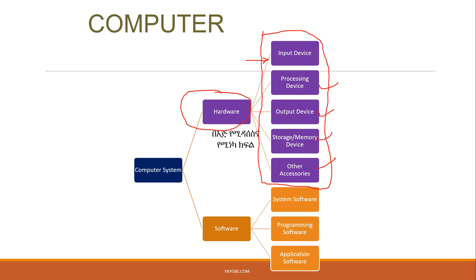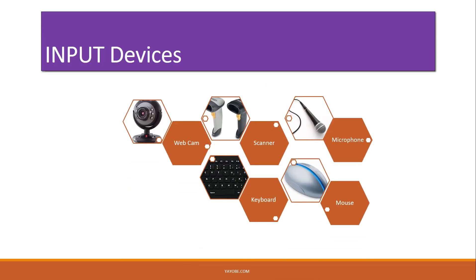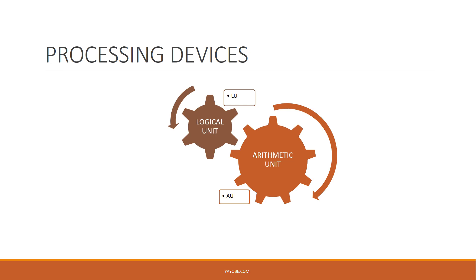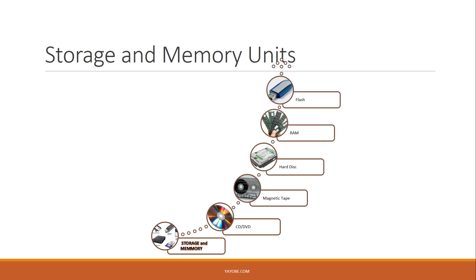What is the software? The software is related to the hardware. The hardware is associated with the software. When it comes to hardware, there are hardware components that connect to the computer. There can be a problem with the input device and a problem with the processing device.